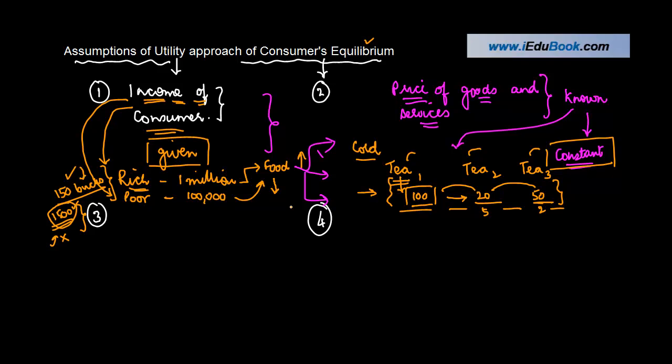So the prices have to remain constant. Third is that—this is the most important, so be careful—utility can be cardinally measured. What does this mean? In all our examples that we were taking, we said that we are deriving X number of units of utility, Y number of utility—40, 100, 80.